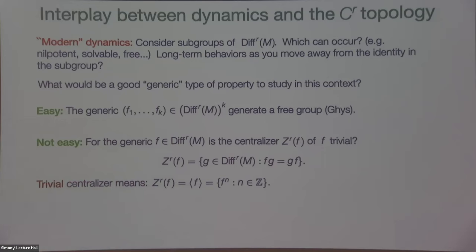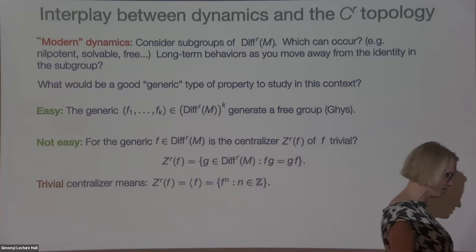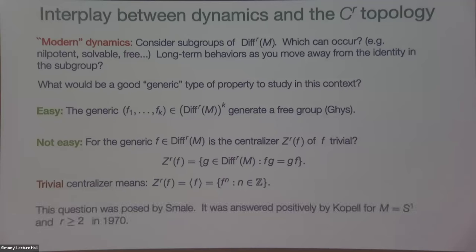This group of diffeomorphisms — the centralizer, because it's literally the group centralizer inside Diff — is always a subgroup, and it always contains the iterates of F, because you always commute with your iterates. The question is: is it true that the generic diffeomorphism has no non-trivial symmetries, i.e., is its centralizer trivial? This is a great question because it's not even obvious what non-trivial thing could hold for a generic dynamical system, and not having any symmetries is a good one. Way back in 1970, Steve Smale's student Nancy Kopell — now a famous applied mathematician — answered this question on the circle for all R at least two.